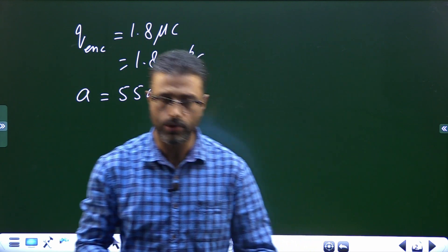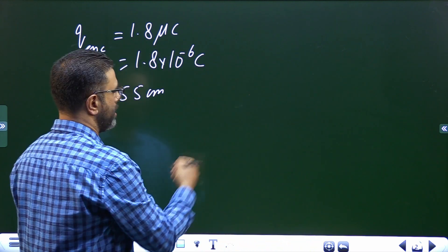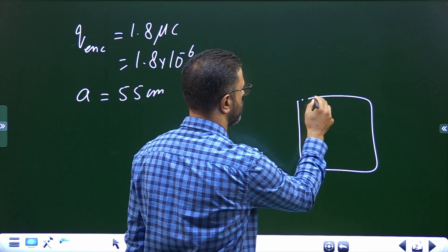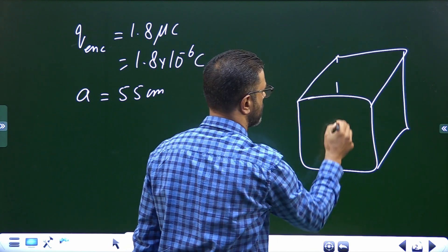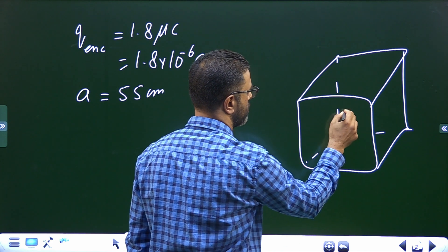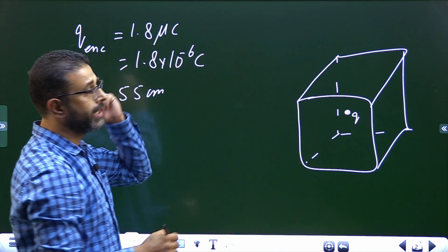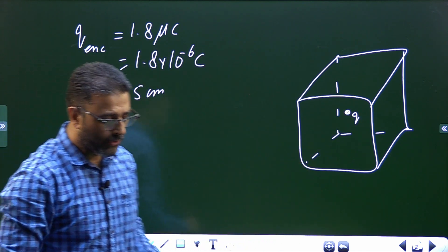So there is some cube like this. We have a cube here and some charge lying inside it. There is some charge which is given by 1.8 micro coulombs. Now we'll find out flux from Gauss law, we already know.